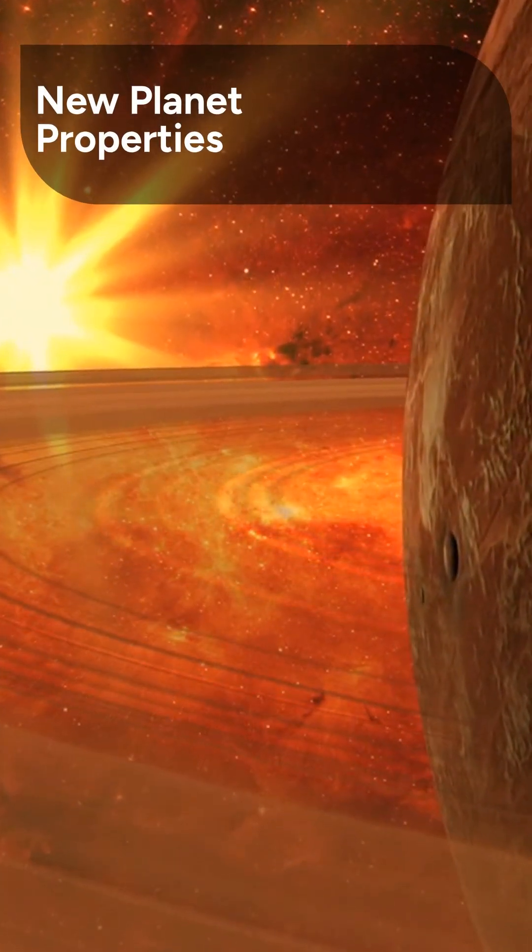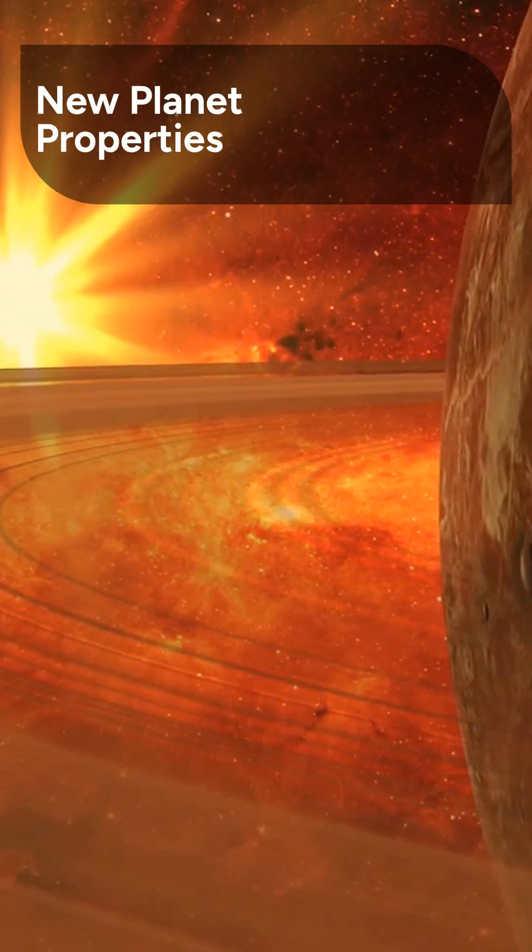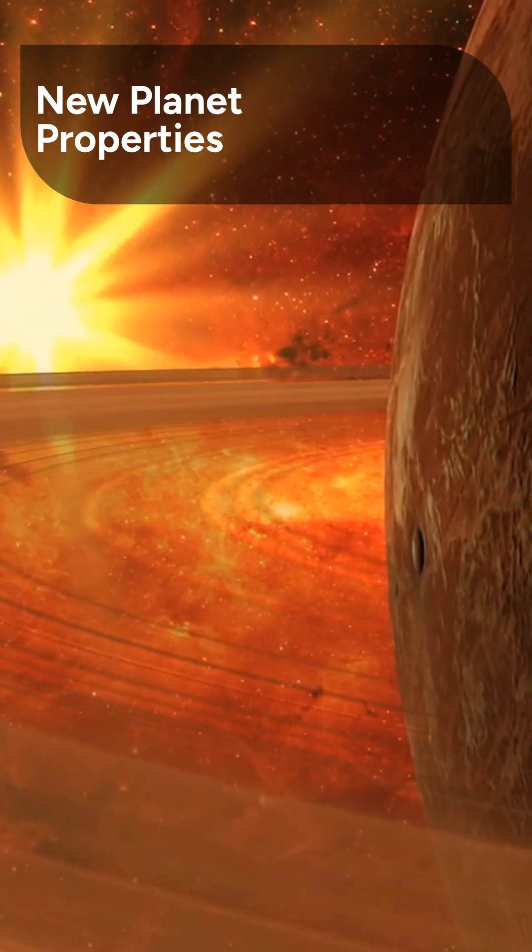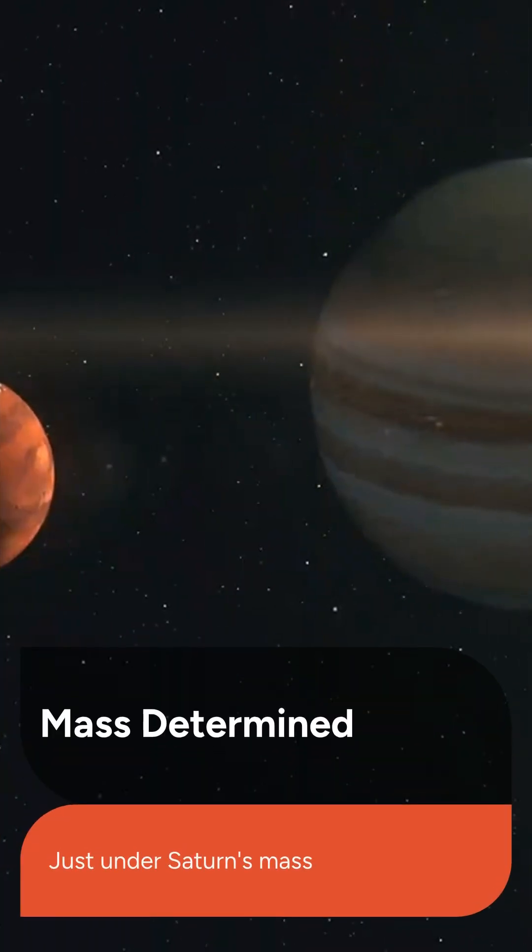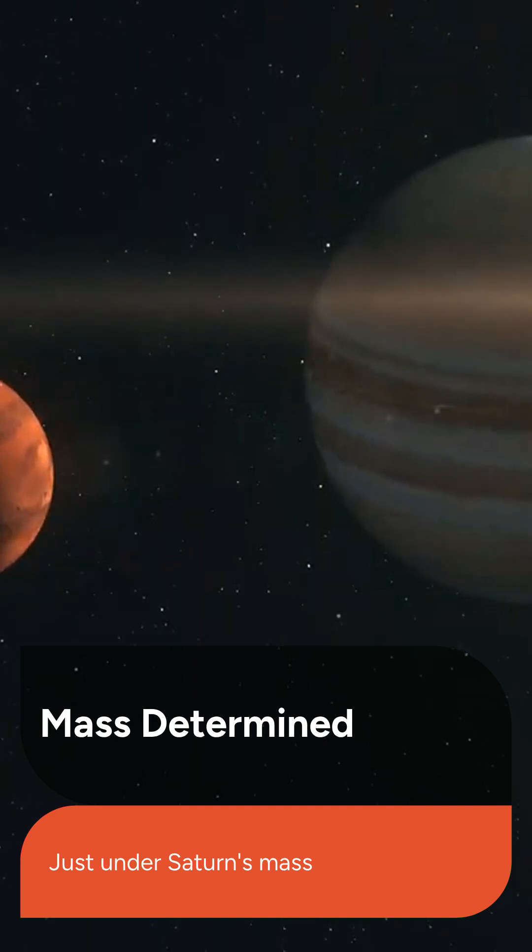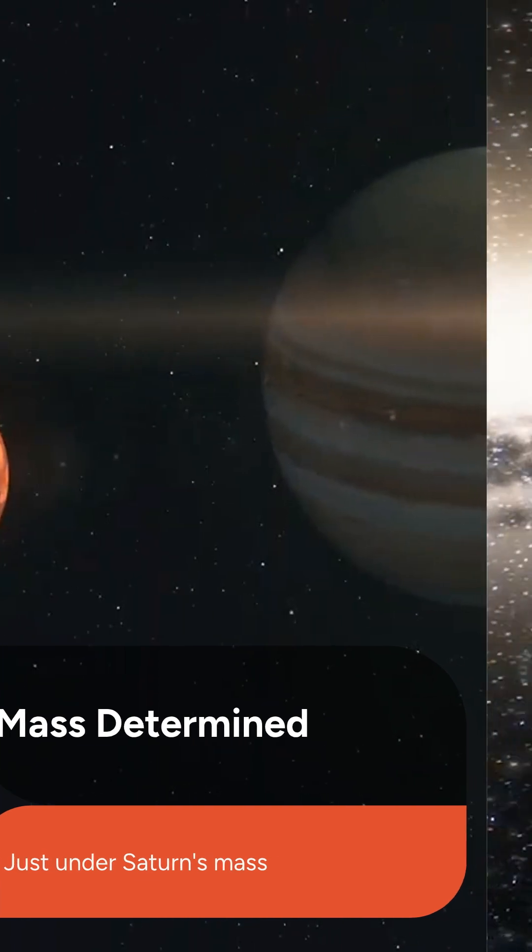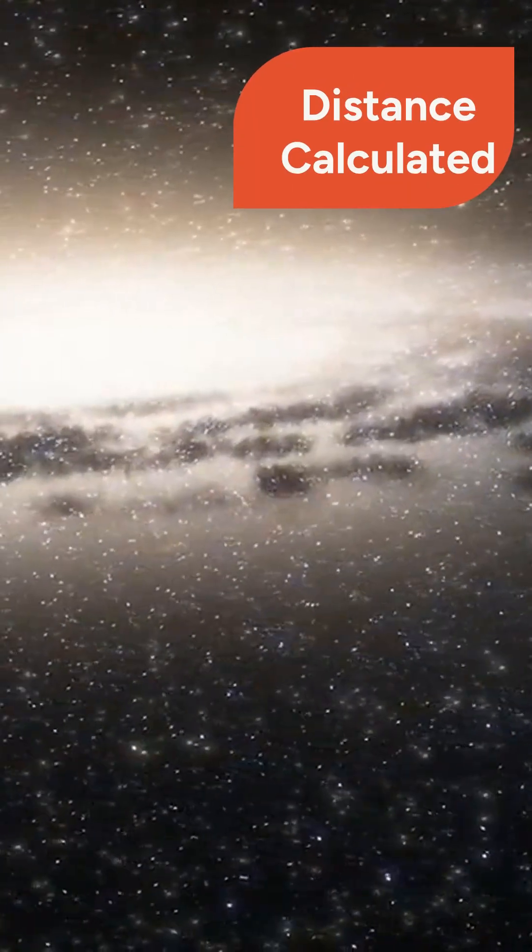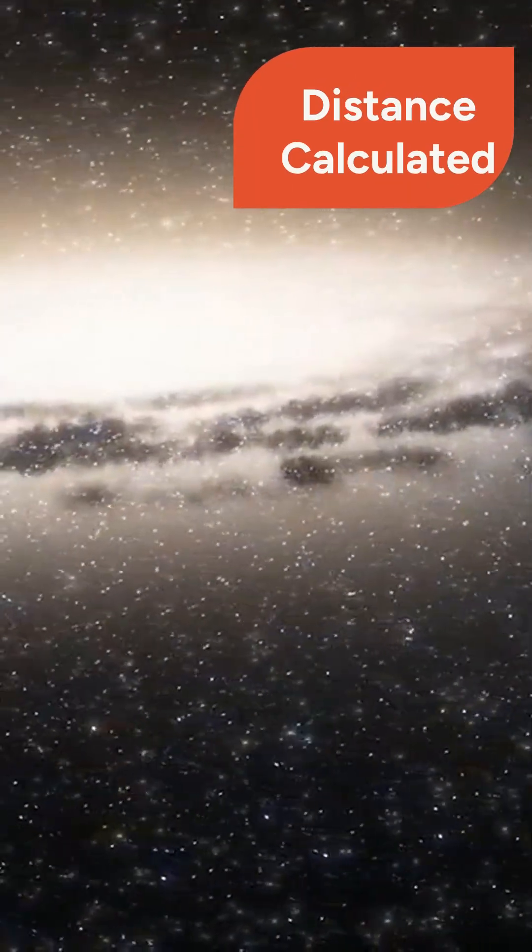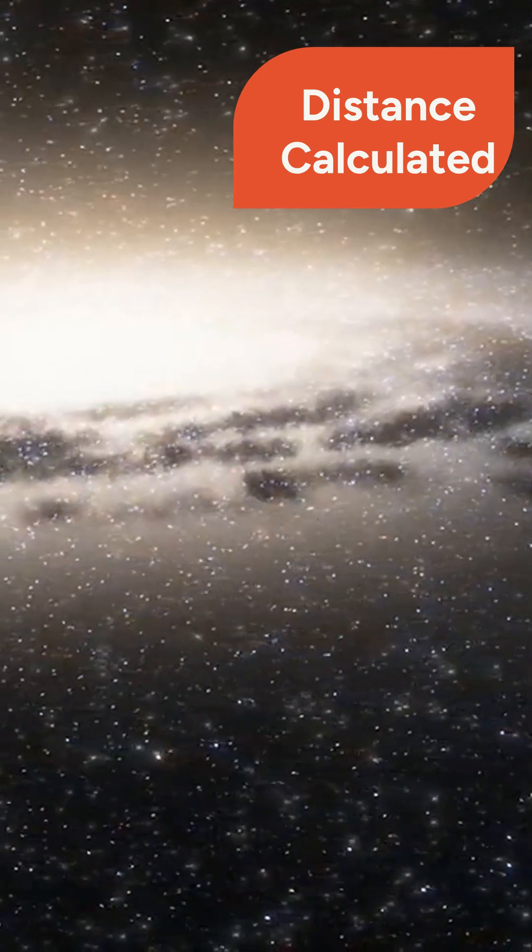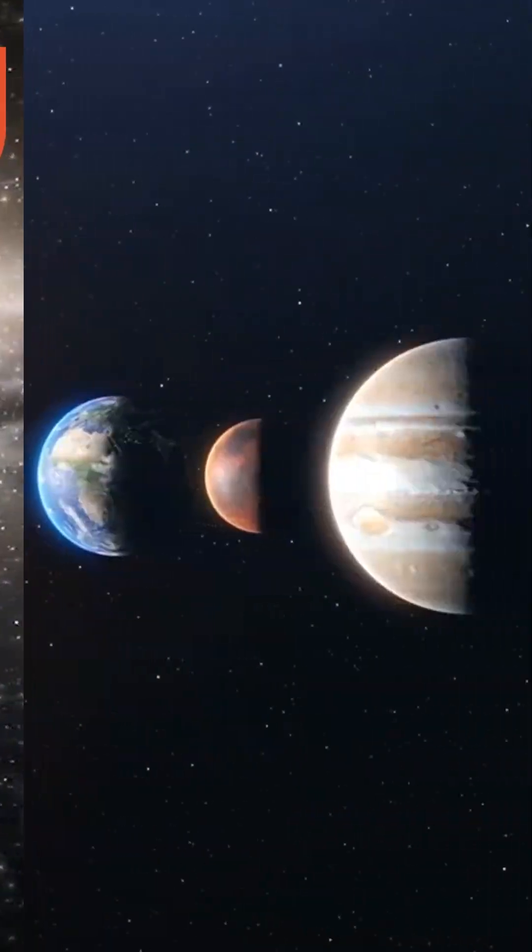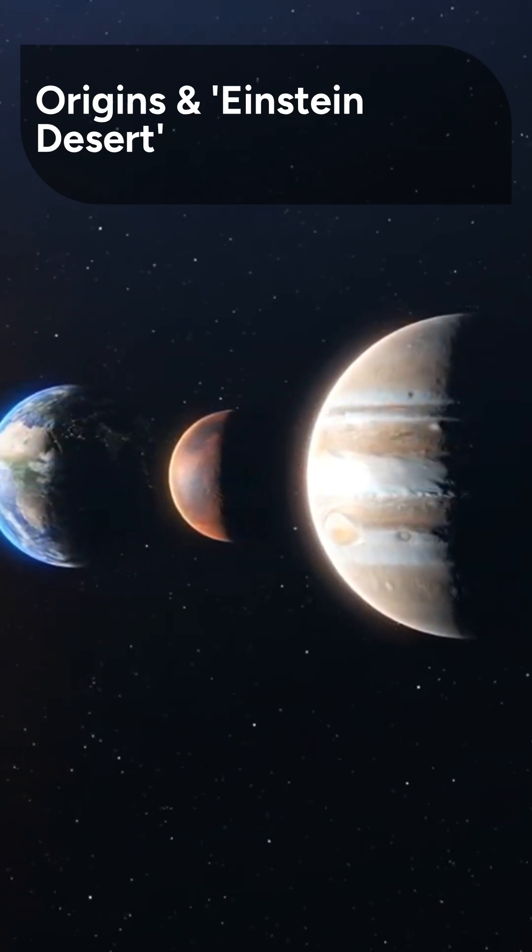With the distance now known, they could accurately calculate the physical properties of this newly discovered rogue planet. The calculations revealed the planet had a mass of around 22% that of Jupiter, putting it just under the mass of Saturn. Furthermore, they determined the planet to be approximately 3,000 parsecs, or just under 10,000 light-years away from Earth.